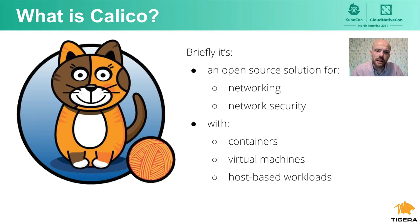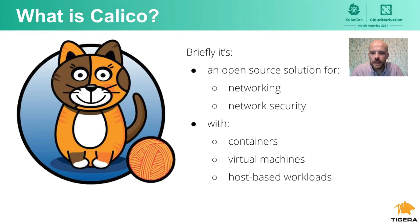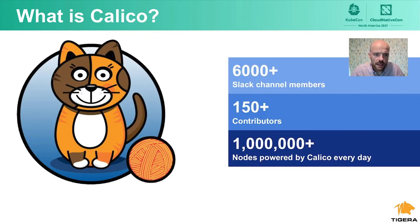Whether you opt to use the eBPF data plane, Linux's standard networking data plane, VPP, or the Windows host networking service data plane, Calico delivers blazing fast performance and cloud-native scalability. It provides developers and cluster operators with a consistent experience whether running in cloud or on-prem. We have more than 6,000 Slack channel members, more than 150 contributors, and more than a million compute nodes powered by Calico every day.